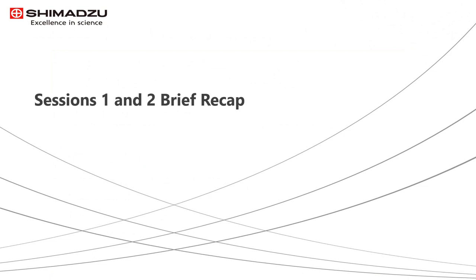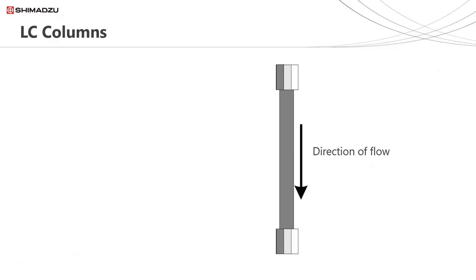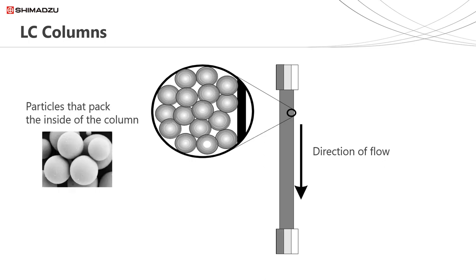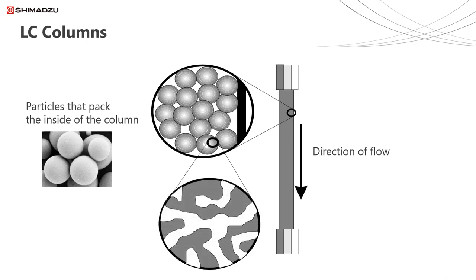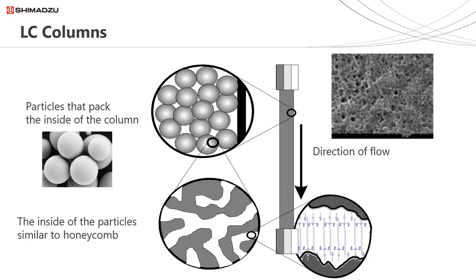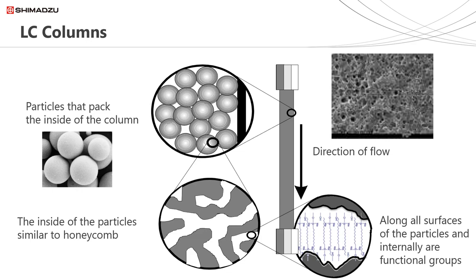Let's begin our session with a brief recap of our first and second sessions. As part of the first webinar we learnt that the inside of a liquid chromatography column is packed with particles, usually silica in nature. These particles in modern columns are spherical and uniform. The inside of these particles is like a network of pathways, similar to the structure of honeycomb. Along the outside of these particles, as well as the walls of the pathways, we can attach functional groups. This is known as the stationary phase and will differ depending on the type of liquid chromatography.